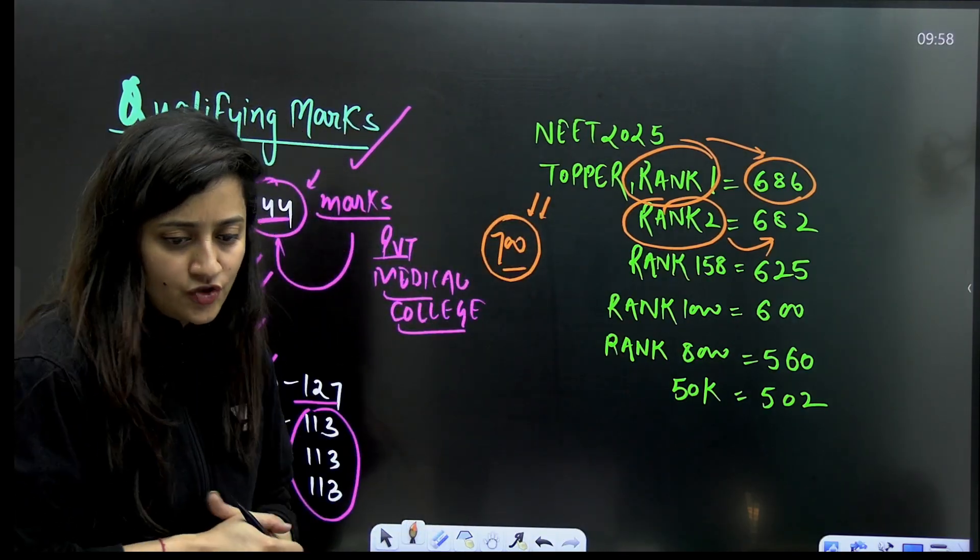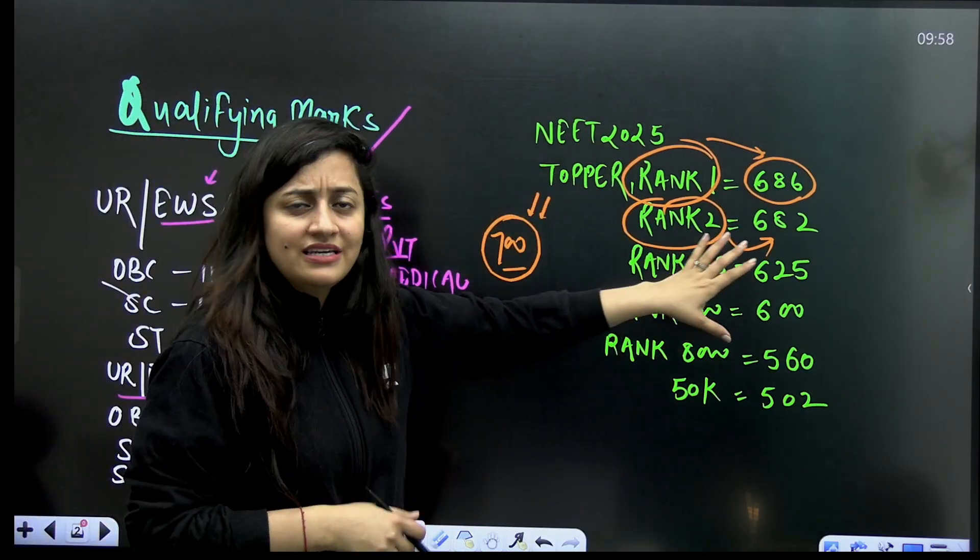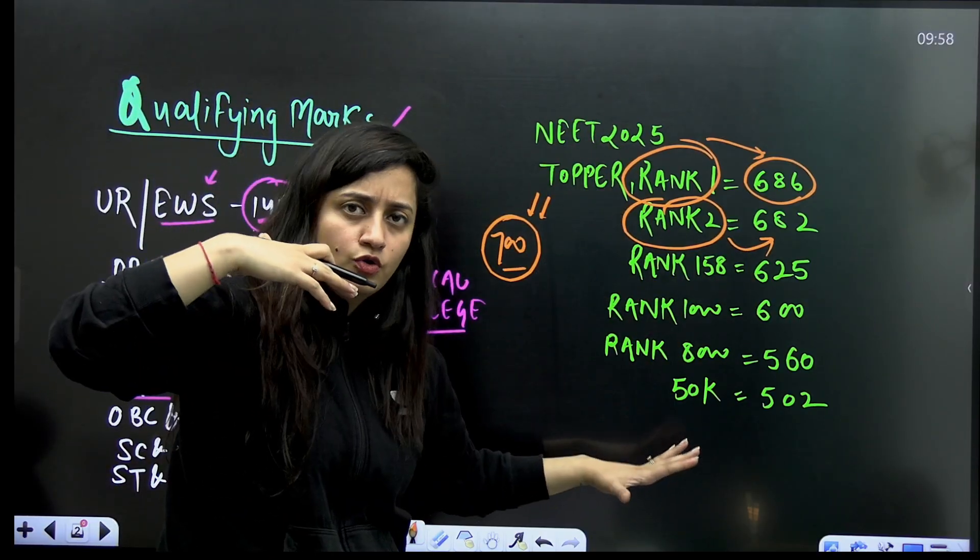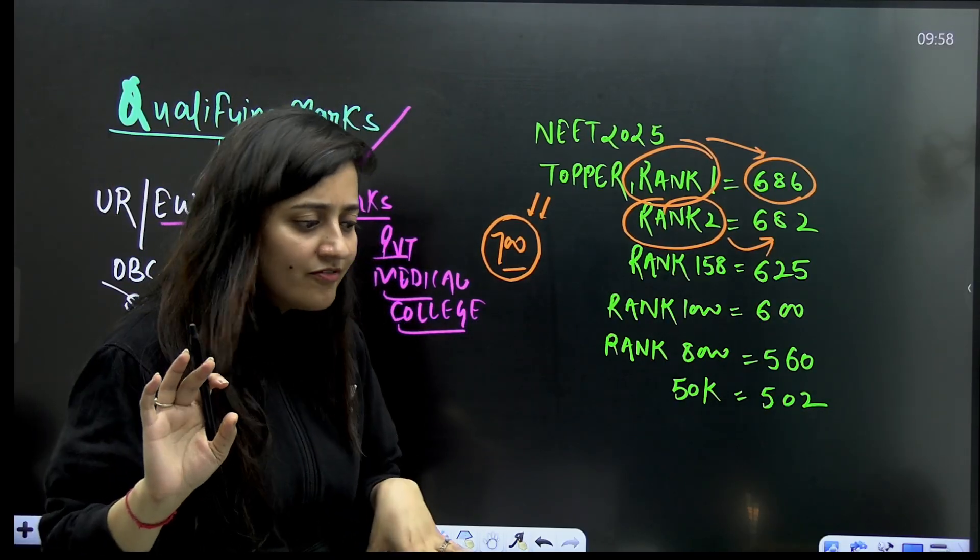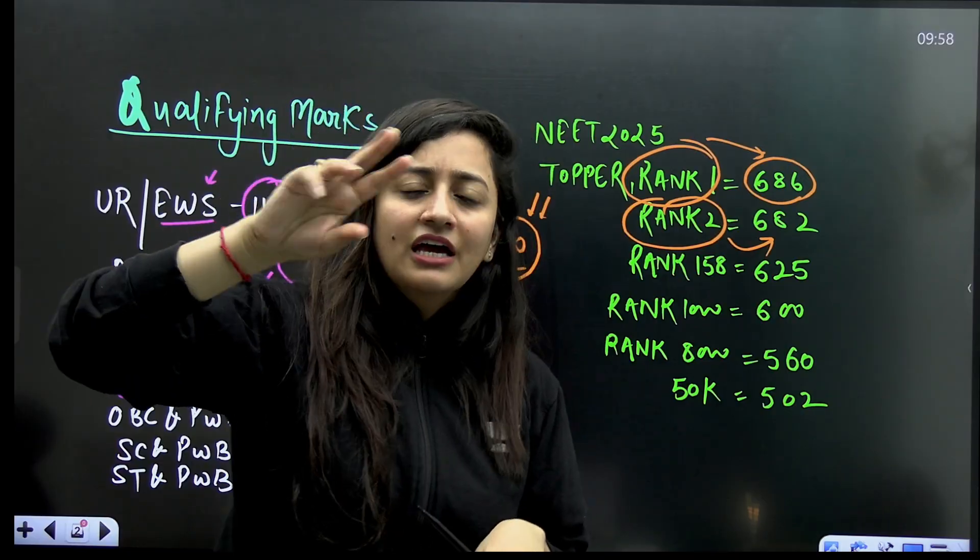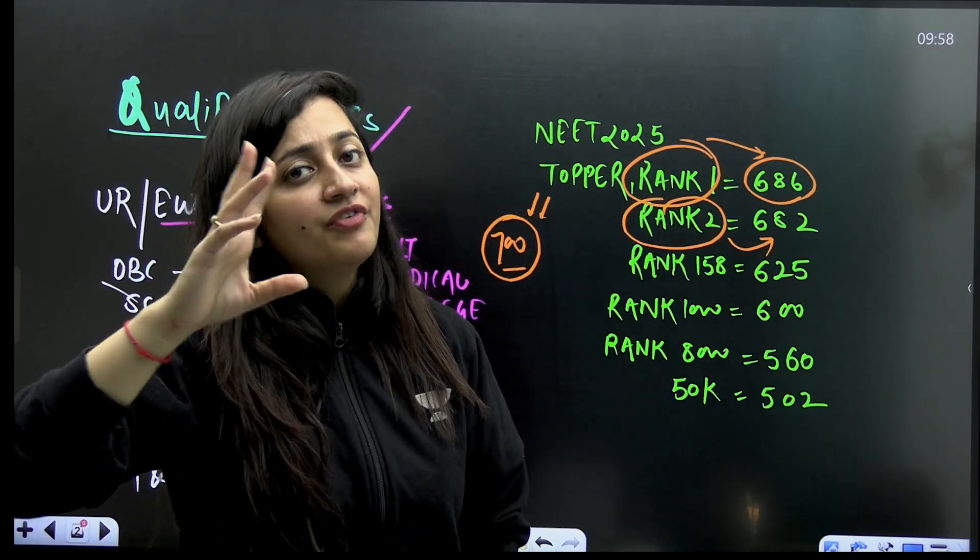Students were not prepared for such type of paper. That's why you can see if exam was difficult, the cutoff was also low. These two things are always inversely proportional to each other. If exam is easy, cutoff will be high; if exam is difficult, cutoff decreases.